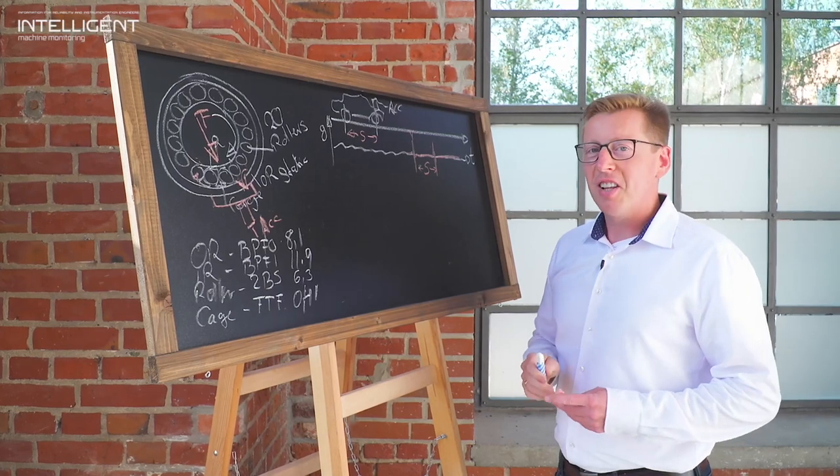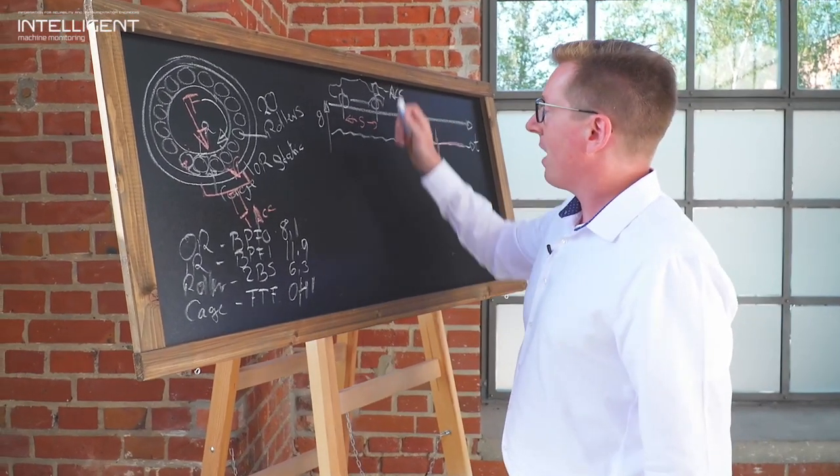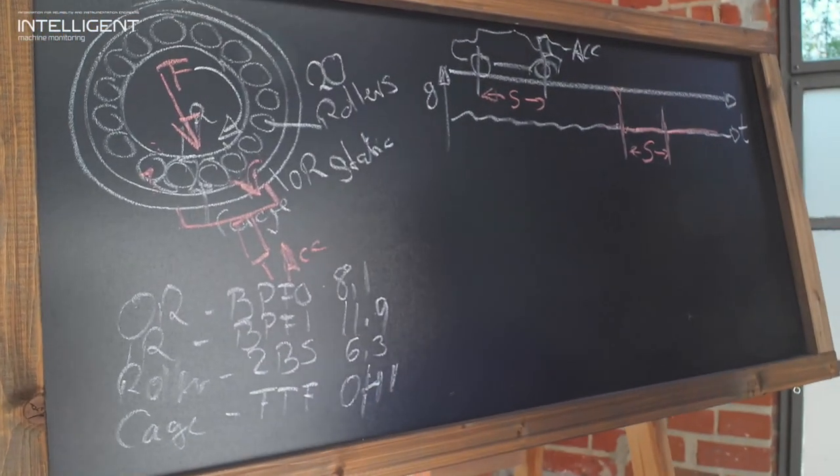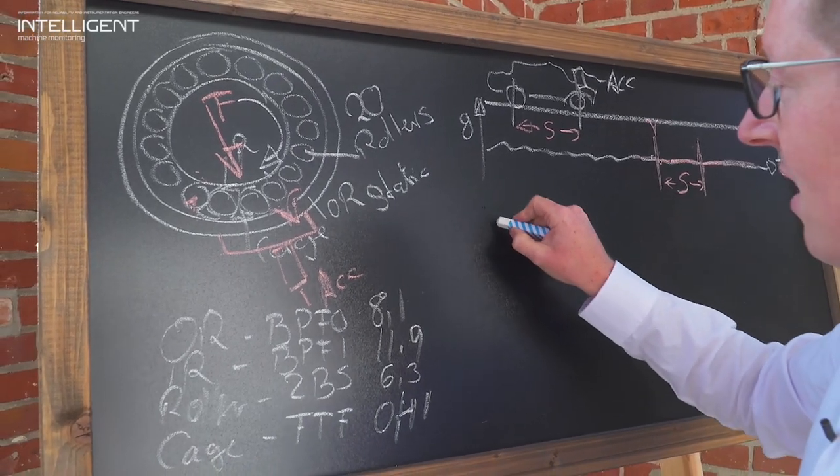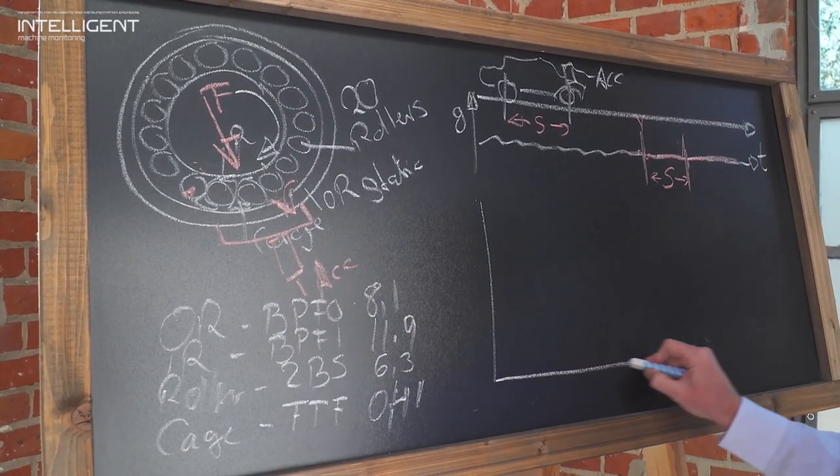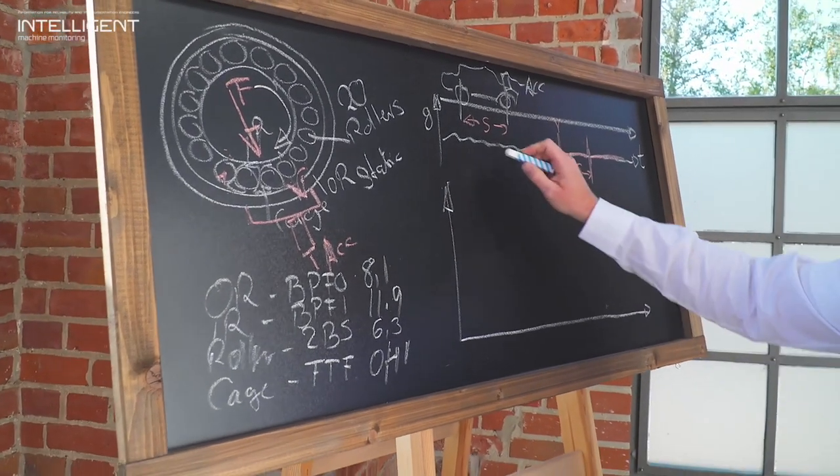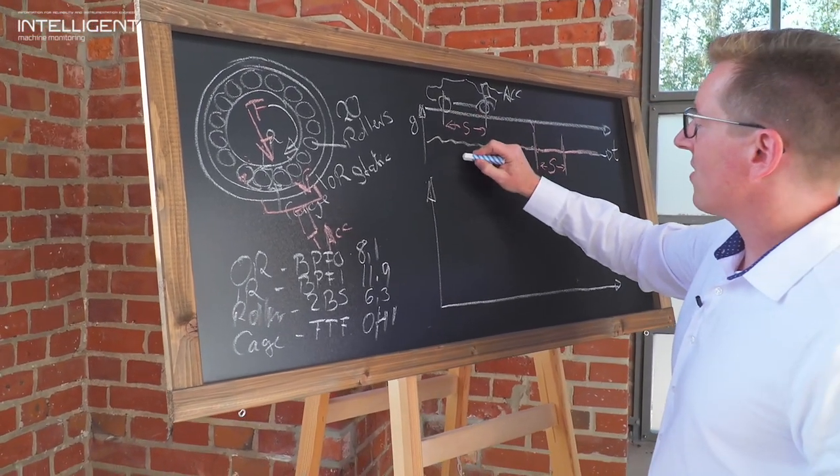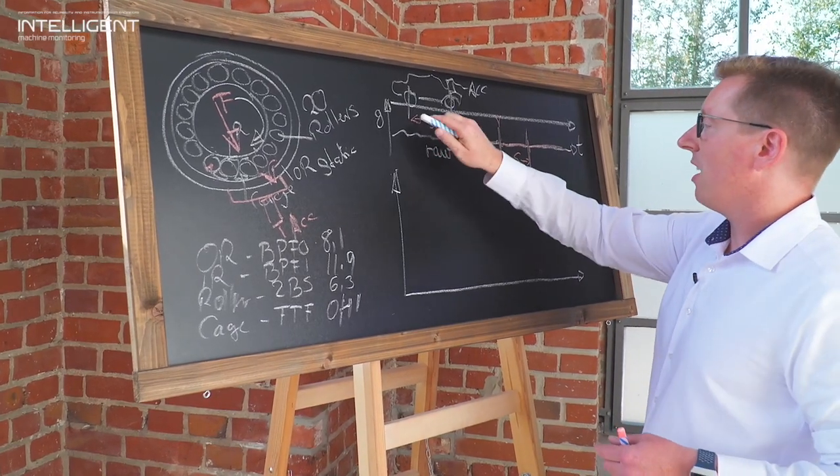As I mentioned the diagnostics on a rolling element bearing is not as straightforward as it is on the on my car example here. What we use to accommodate this fault frequency analysis is a so-called spectrum. The data above is so-called a time waveform.